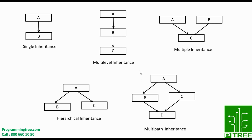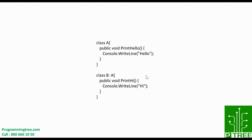In multipath inheritance, apart from this, if more than one inheritance scheme is joined together to create a combination, it is called hybrid inheritance. Now let's understand how to write the code for inheritance in C#.